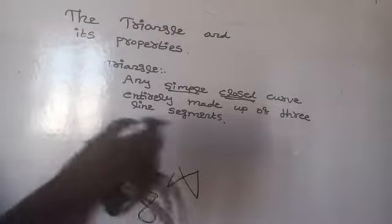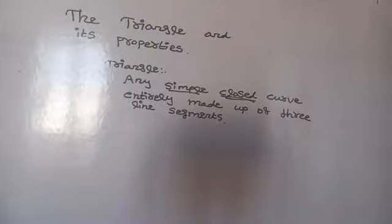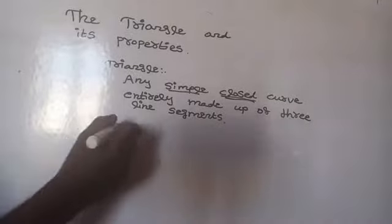How many parts are there in a triangle? There are 6 parts. They are 3 angles and 3 sides. A triangle has 3 sides.